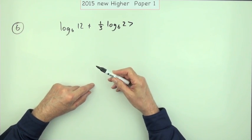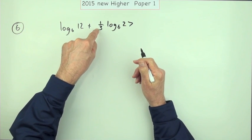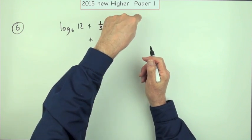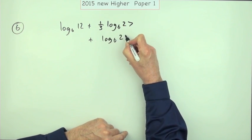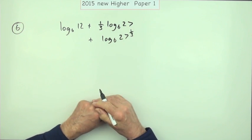the laws of logs to tidy this up. The first one you'll probably think of is that a multiplying number can pop in as a power, so that can turn into log base 6 of 27 to the power ⅓.